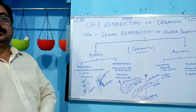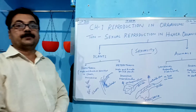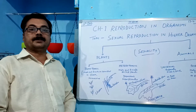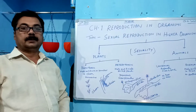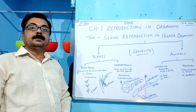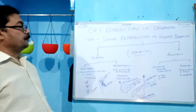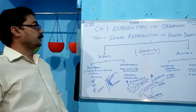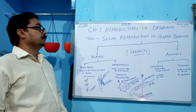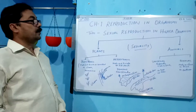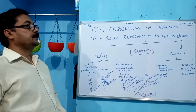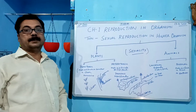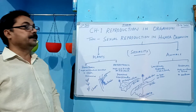Good morning class 12 students. VIO class today. The next topic to be discussed is from Chapter 1, the reproduction in organisms. We start today the topic of sexual reproduction in higher organisms. In the previous class, we studied about asexual reproduction in plants and animals.